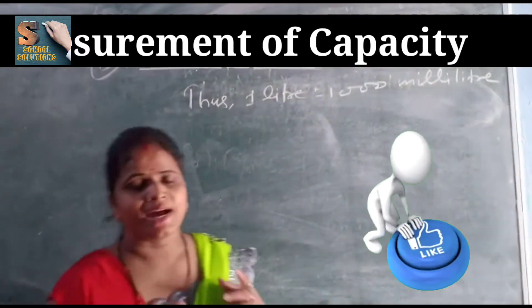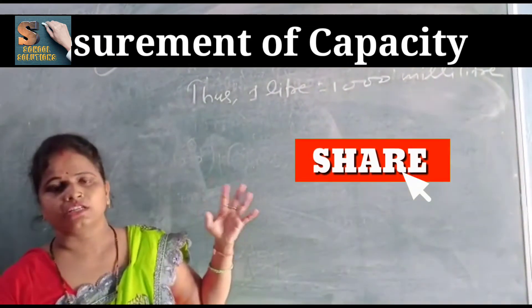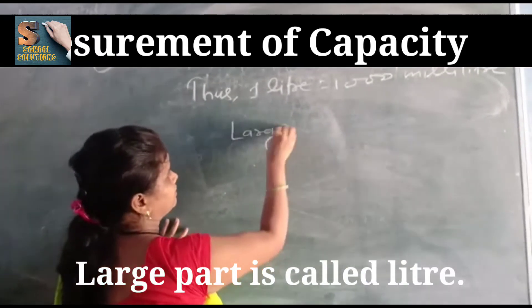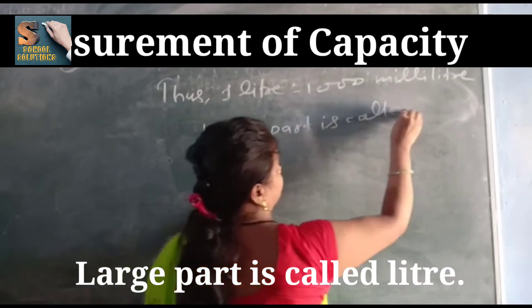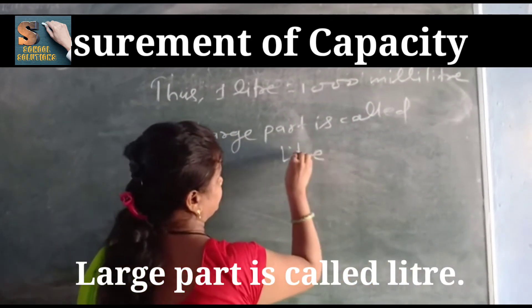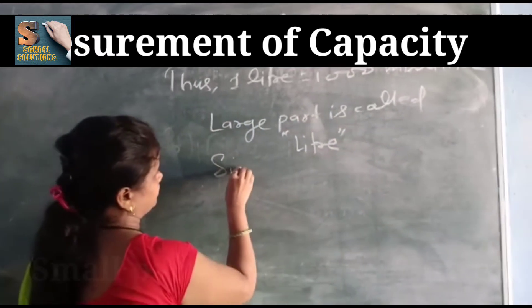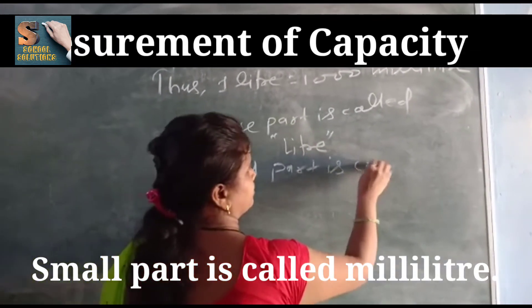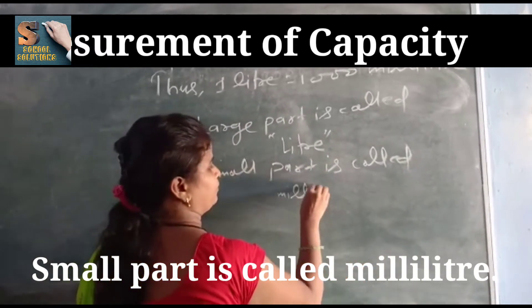A small part is called millilitre and a large part is called litre. One litre is equal to one thousand millilitres. A small part is called millilitre.